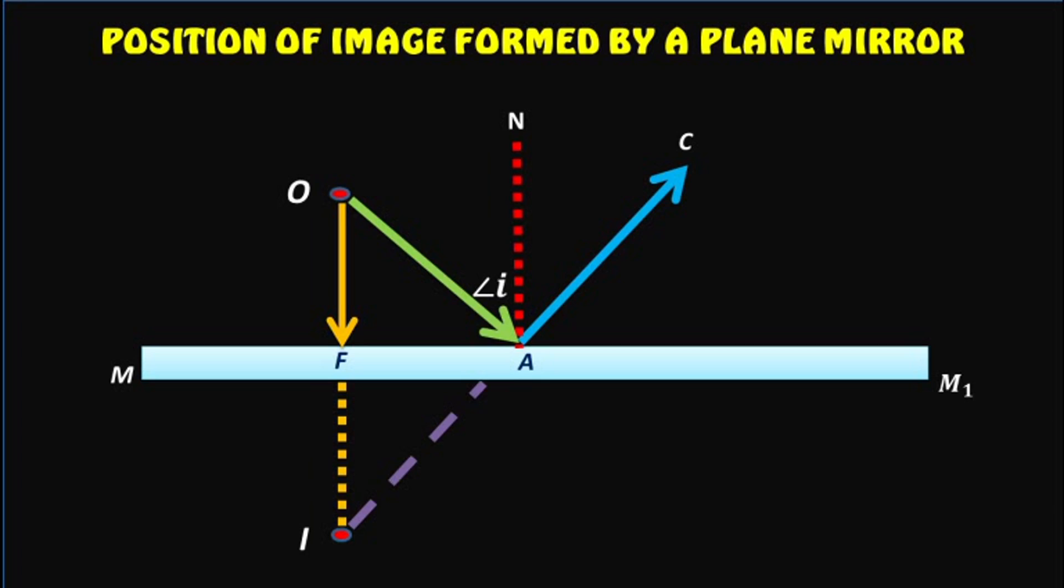By the law of reflection, angle of incidence is equal to angle of reflection, or angle OAN is equal to angle CAN.